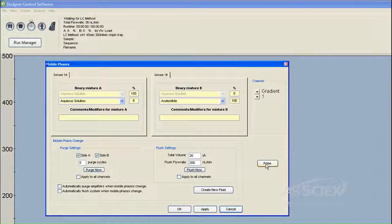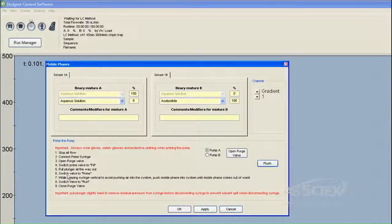Click Prime. Follow the on-screen instructions. Select the pump side. Click the Open Purge Valve button.